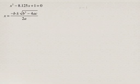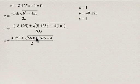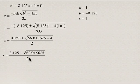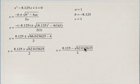Here we have our quadratic formula, and we're going to identify a, b, and c. So a is 1, the coefficient on the x squared term, b is negative 8.125, and c is 1. Now we're going to substitute into our quadratic formula, and there are two possible values of x: one where you add the square root of the discriminant, and the other where you subtract it.